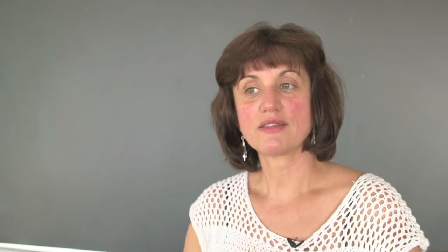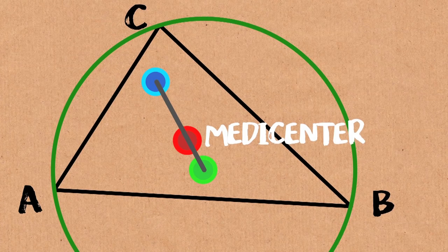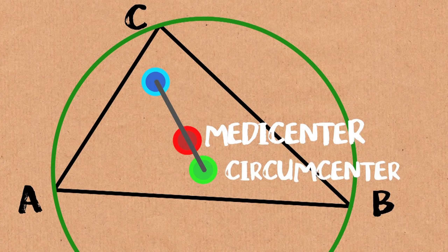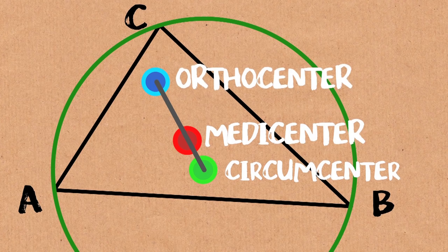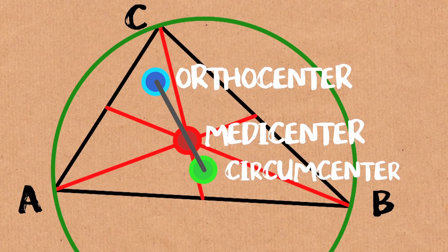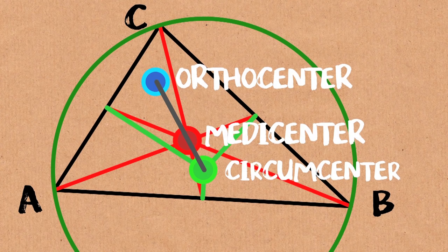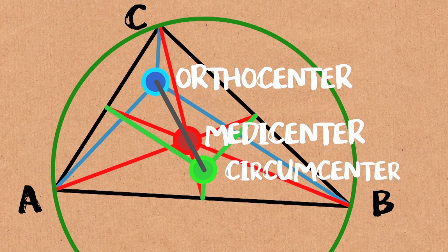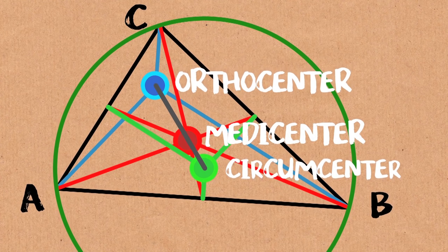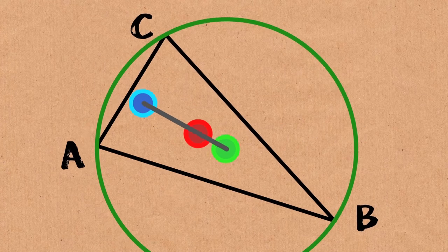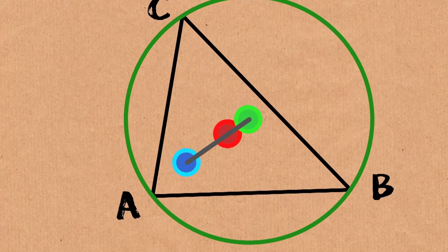How about the three centers? Are they in some general position to each other? Or are they relatives of each other? They are related somehow. So you have the medi-center, the circumcenter, and the orthocenter. You have the three medians, the three perpendicular bisectors, and the three altitudes. Let's simplify it. So we are looking only at these three points. Let's see what is happening.